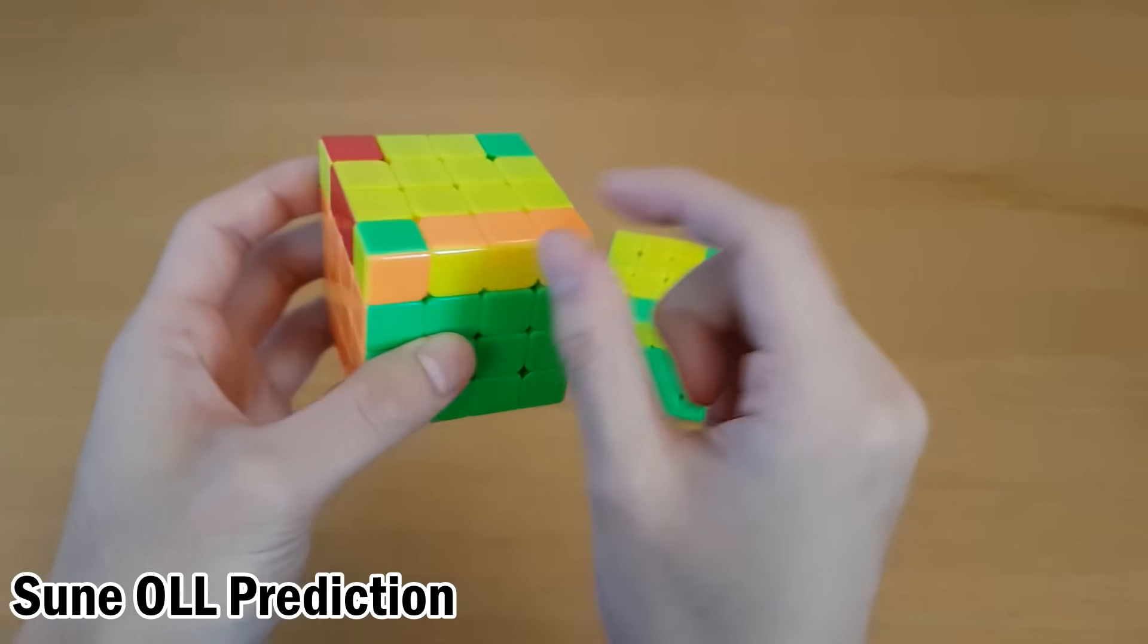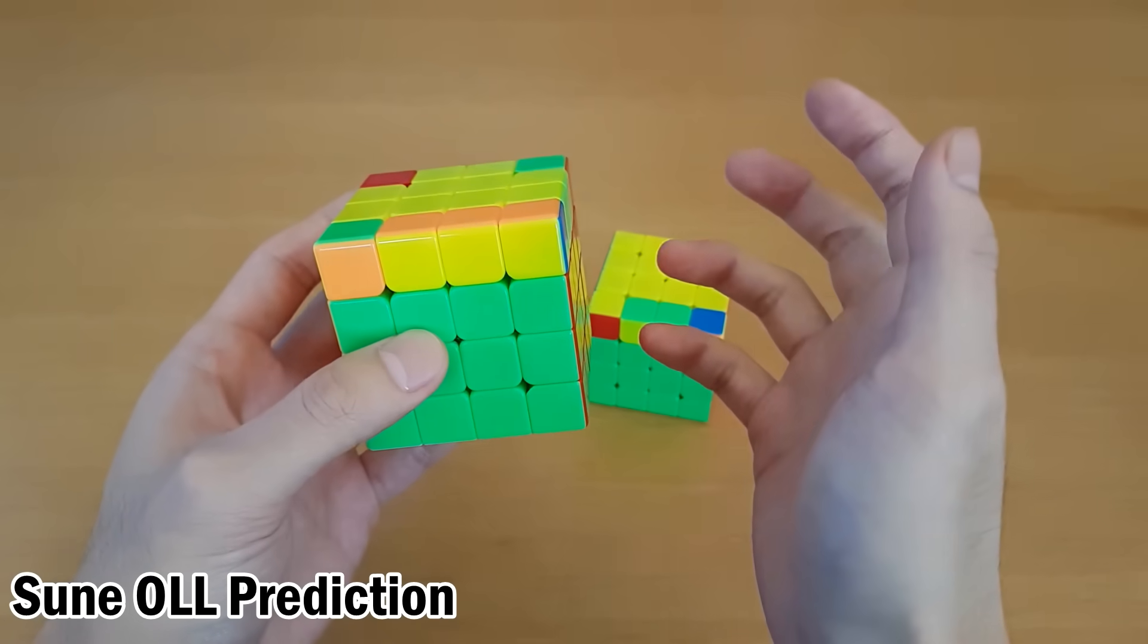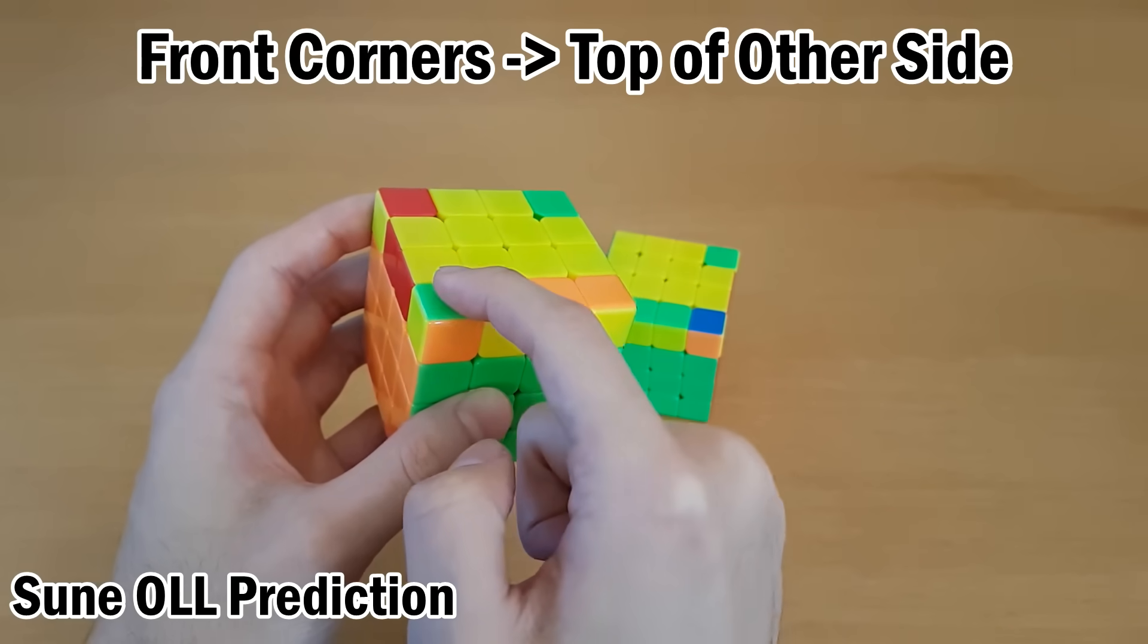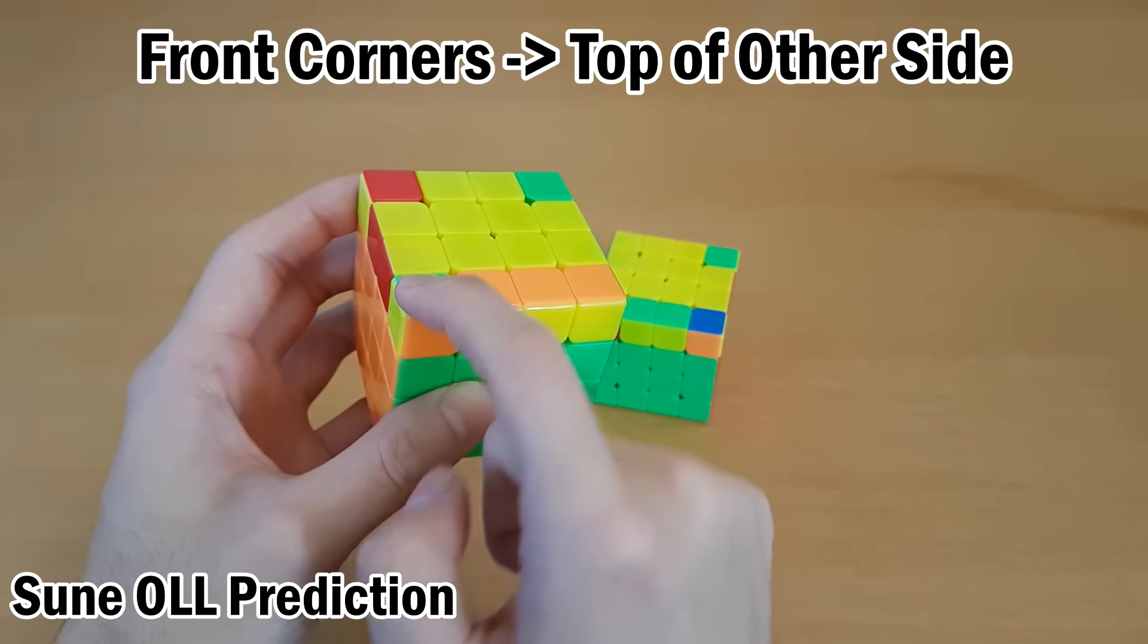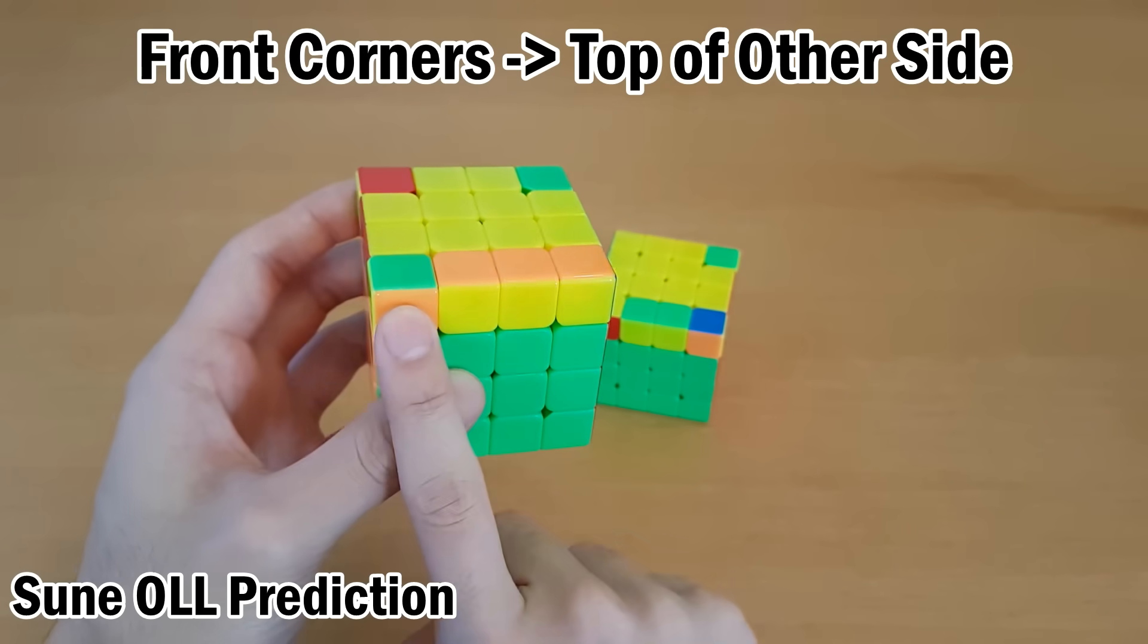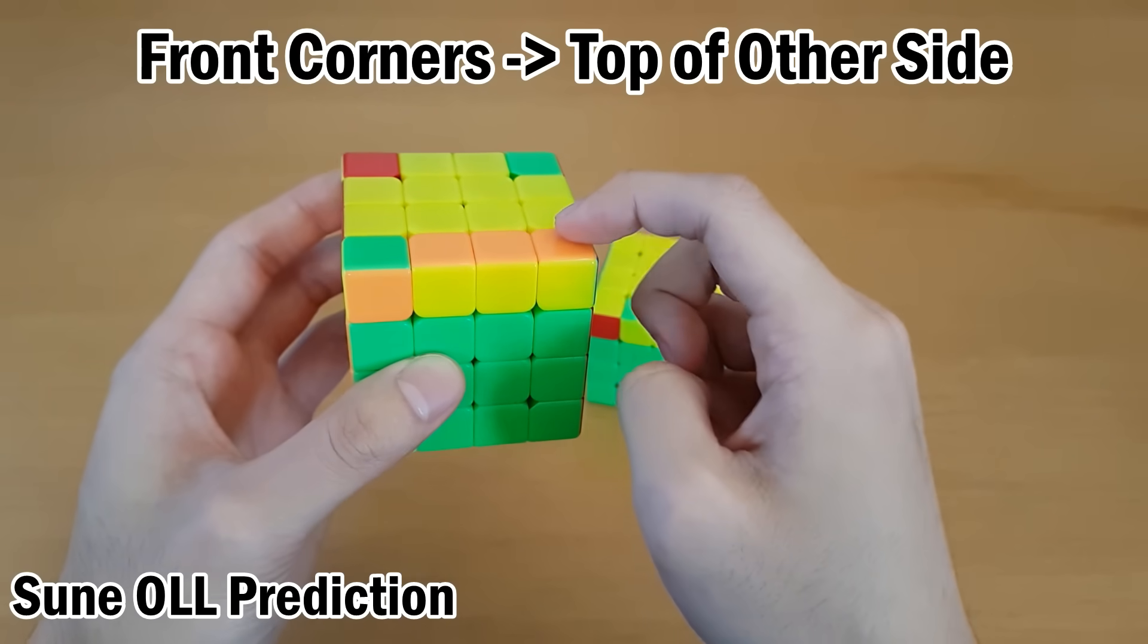So you have to be able to predict when they will be oriented. So you could remember exactly how these corners behave, but as for this video, all you have to know is the rule is that front-oriented corners end up going to the top of the other side. So this one is going to have one oriented corner here by the end. This one is not oriented front, so it's not going to create an oriented corner here.